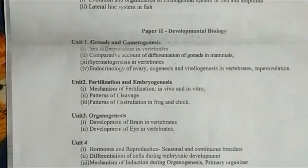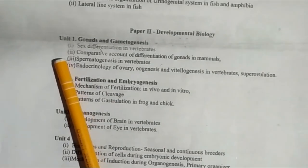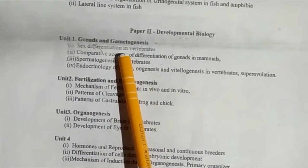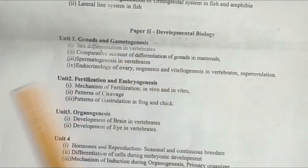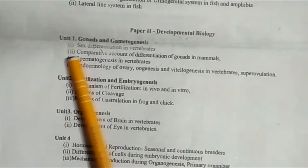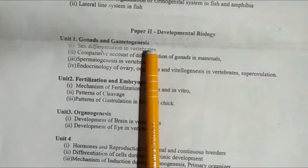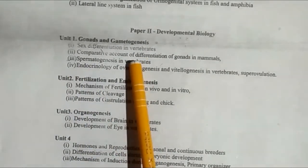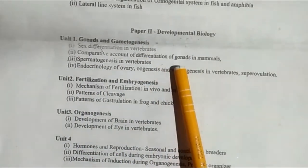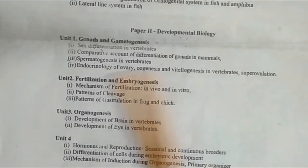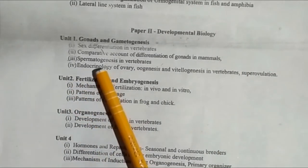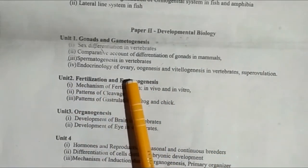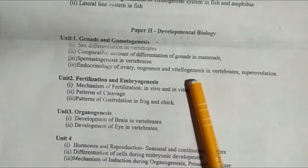Now I'm going to discuss Paper Second. Unit First covers gonads and gametogenesis, including sex definition and differentiation in vertebrates, comparative account of differentiation of gonads in mammals, spermatogenesis in vertebrates, endocrinology of the ovary, and oogenesis.